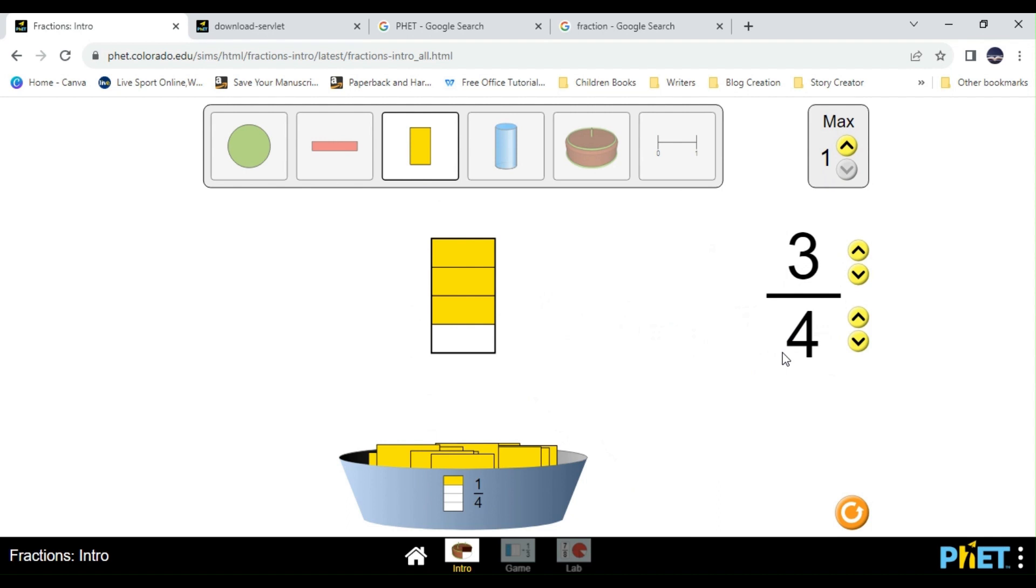So the numerator represents the number of selected parts. So when we increase the numerator, we are increasing the number of selected parts. When we increase the denominator, we are increasing the total number of parts.